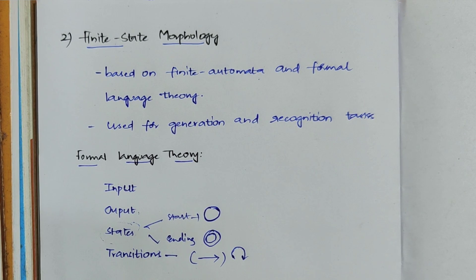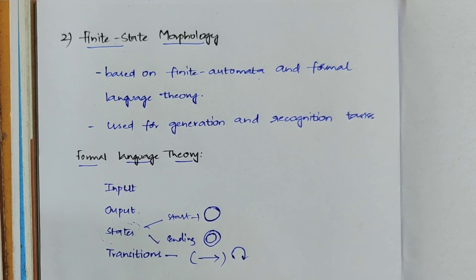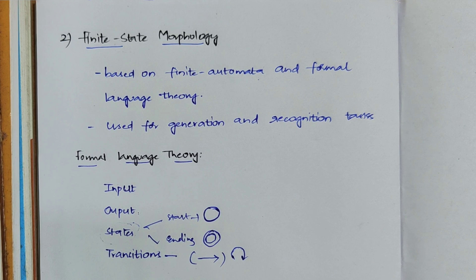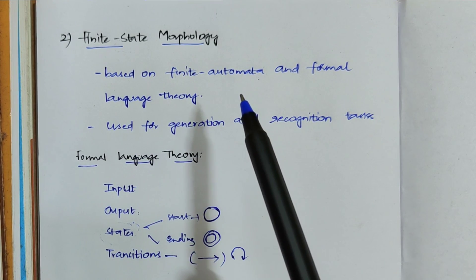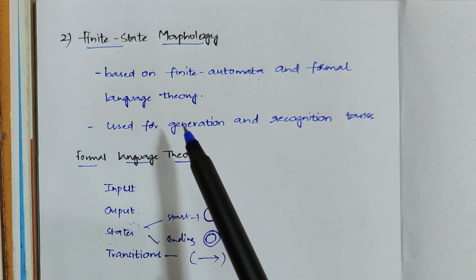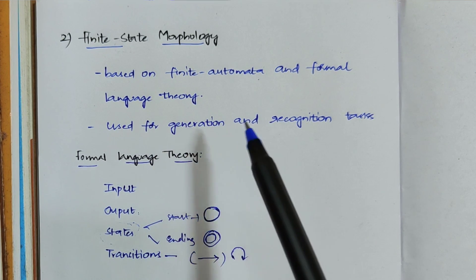Hi guys, welcome back to my channel. In the previous video I discussed about what is morphological models, and we discussed about one of the morphological models called dictionary lookup. Now we are discussing about finite state morphology. This finite state morphology is also used to analyze the structure of a word, but it uses finite automata and formal language theory in order to analyze a word.